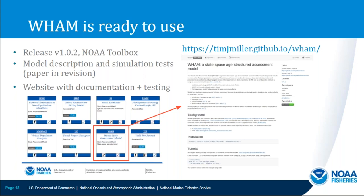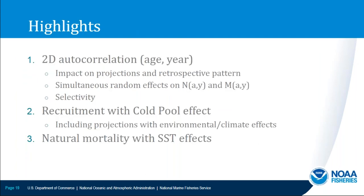We've also spent significant effort developing a website with documentation and testing. Now I'd like to go into research highlights showing what WAM can do. The first section covers 2D autocorrelation by age and year — showing results of models using that, how projections and retrospective patterns are impacted, how we can simultaneously estimate random effects on both numbers at age and natural mortality, and 2D autocorrelation in selectivity. The last two points cover a mechanistic approach with recruitment impacted by a cold pool effect and natural mortality with temperature effects.